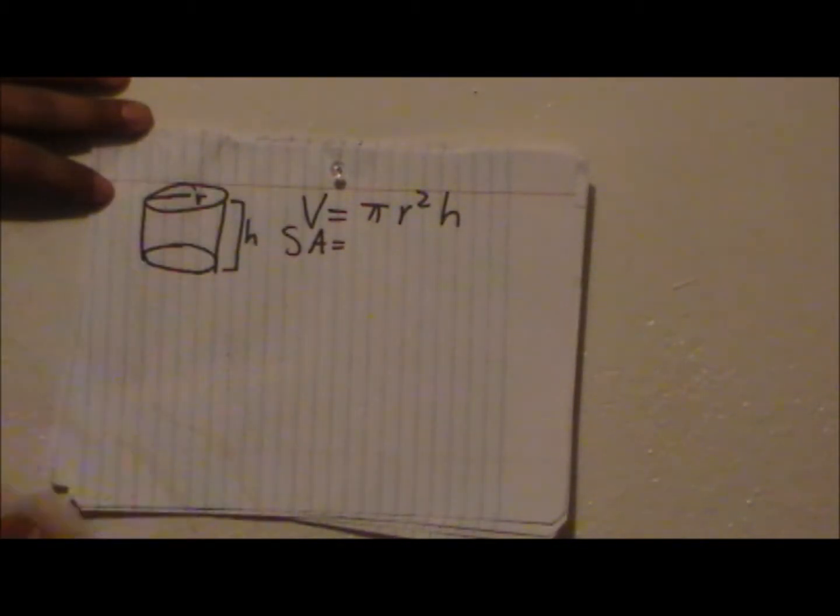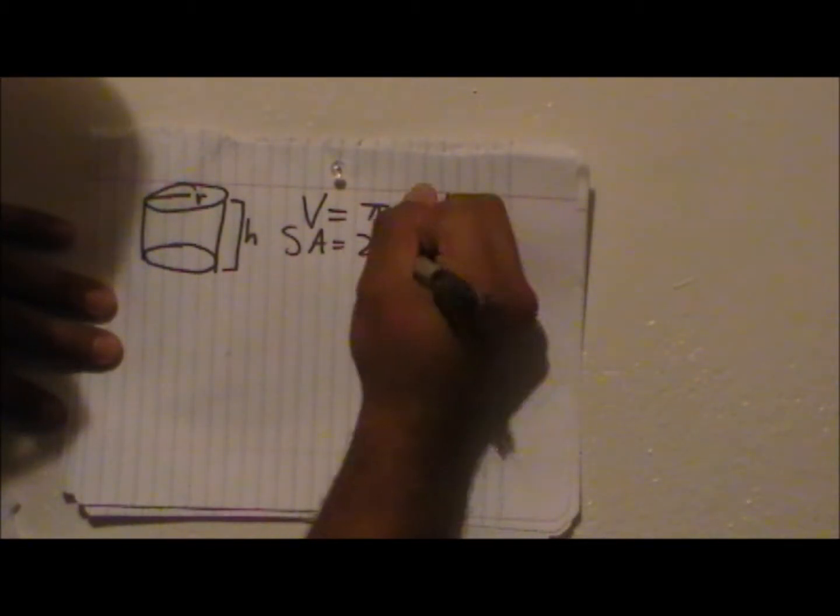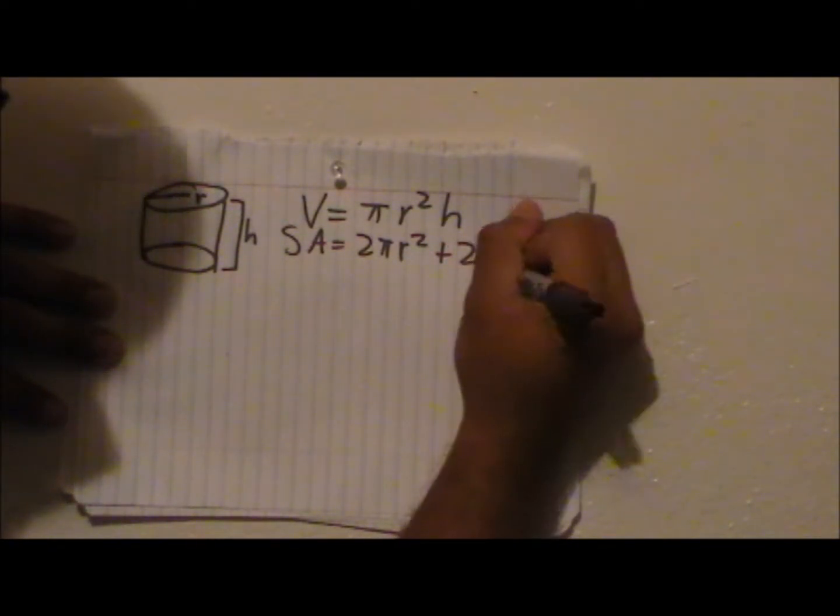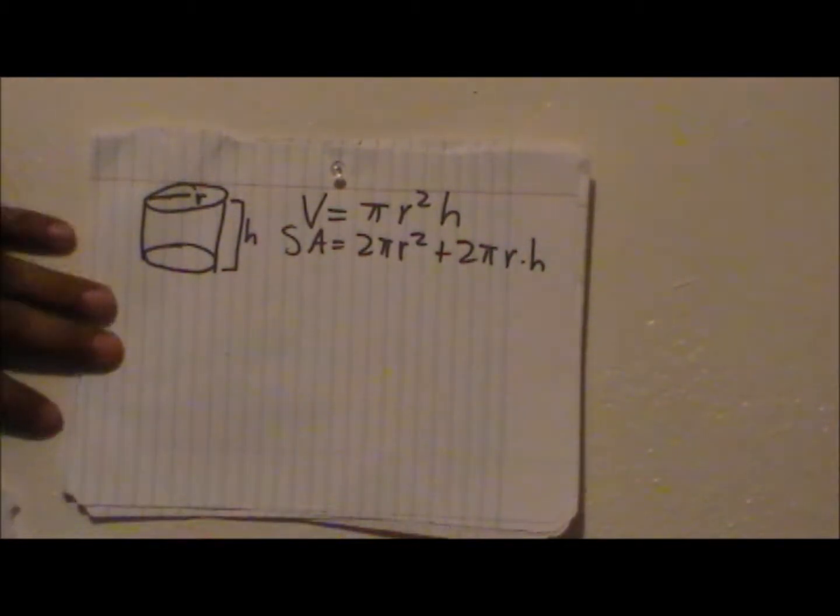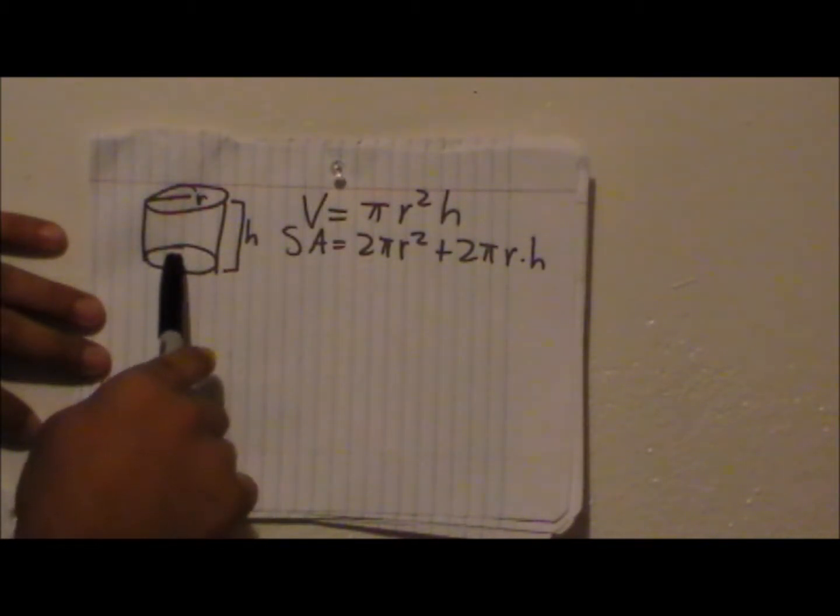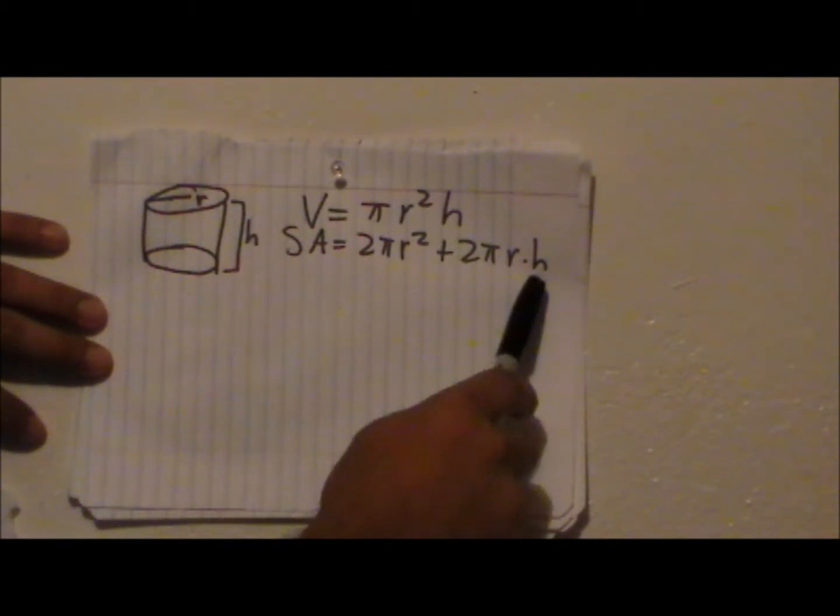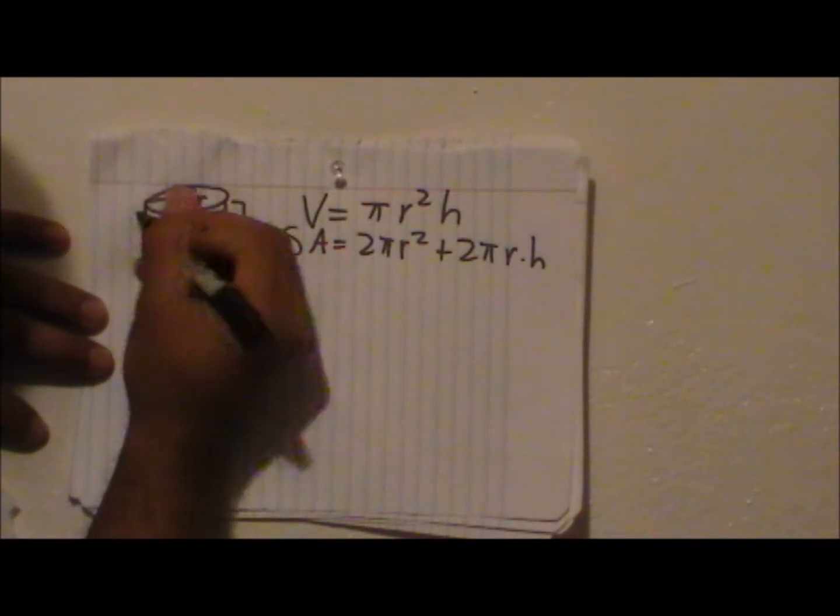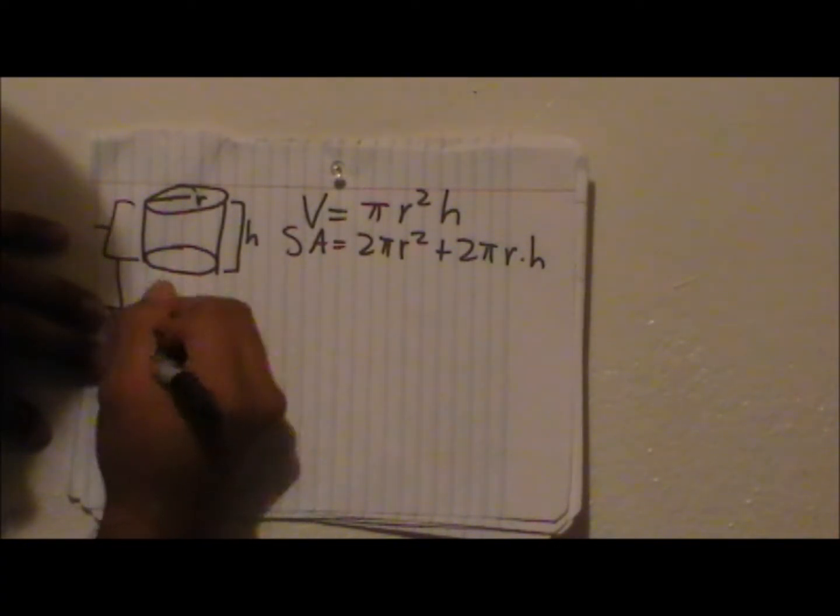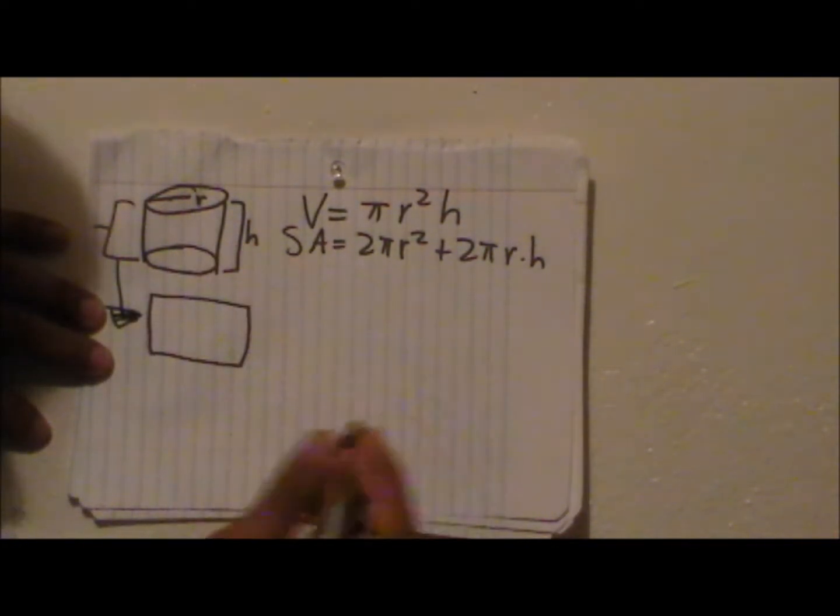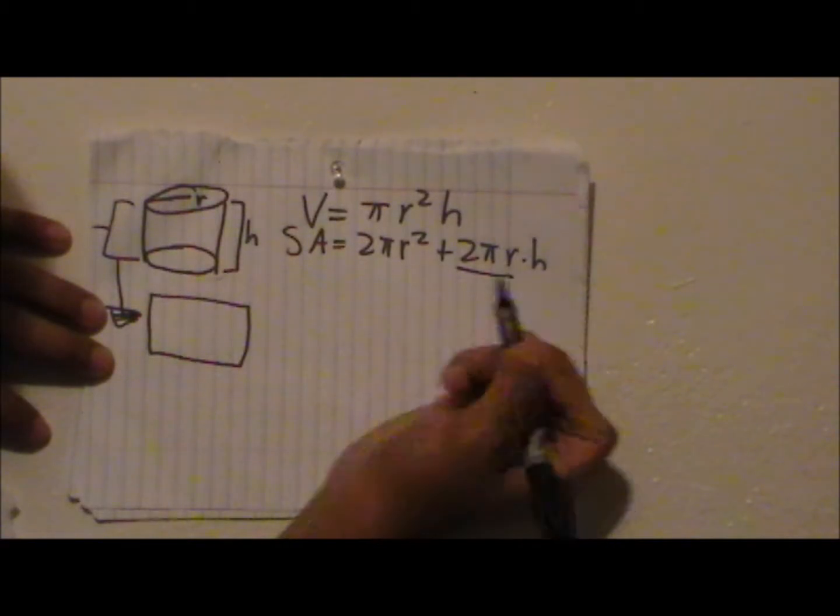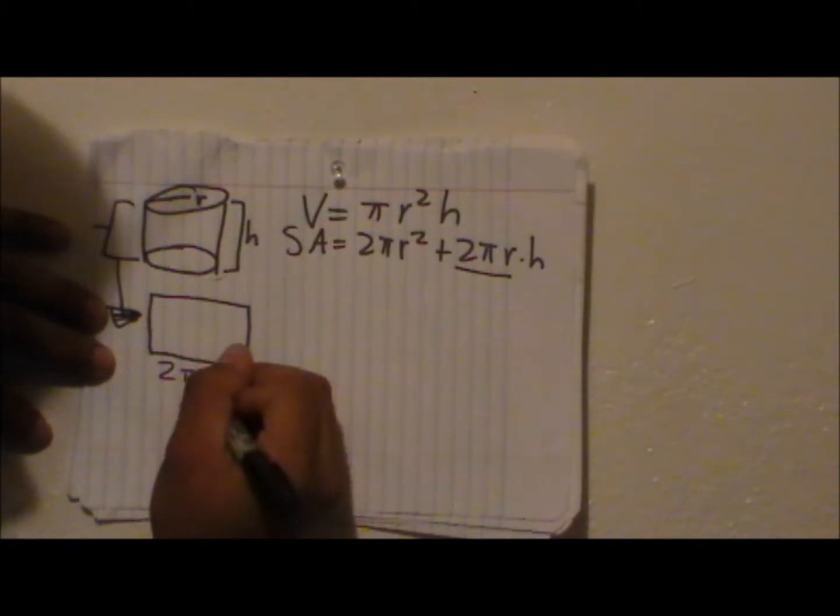So the surface area of a cylinder is 2 pi r squared plus 2 pi r times h. This is basically the area of the base of the cylinder, and this is the area of this part of the cylinder, which if you were to cut it open, it should look like this. So the bottom is the circumference of the circle, so that's how we get 2 pi r times height.